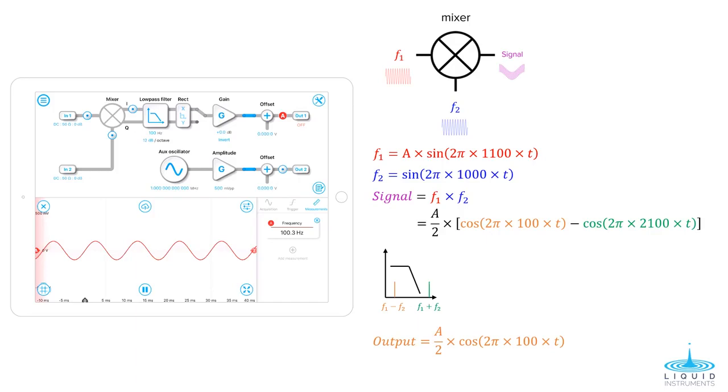Now let's think about the function of the lock-in amplifier, a special case of a heterodyne, where our signal of interest is at the same frequency as a locally generated oscillator, or F1 equals F2. What happens?